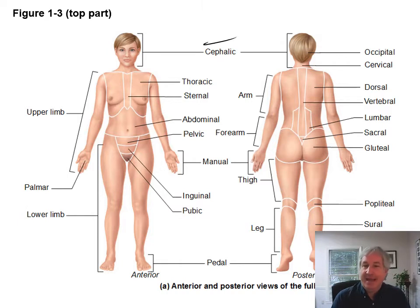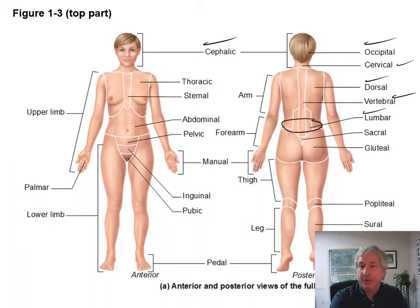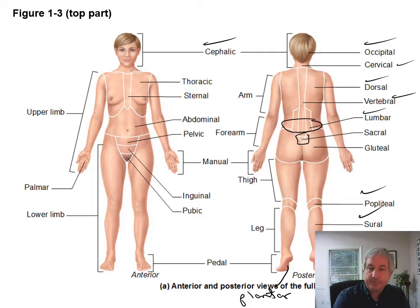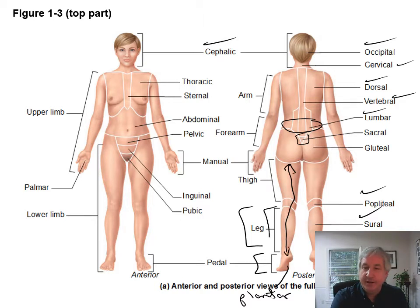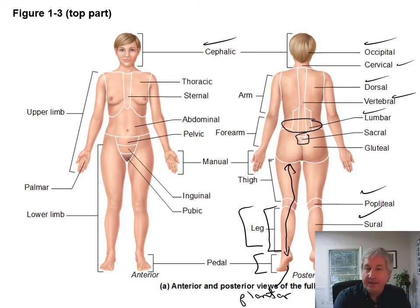We have the cephalic region — that's the head. The occipital region is the back of the head. Cervical region is the neck. We have dorsal, which is the whole back. Vertebral is where the spinal cord and vertebrae are. Lumbar region is the lower part of the back. Sacral region is where the sacrum is. Gluteal region is the buttocks. Popliteal region is the back side of the knee. The sural region is your calf. The plantar region — P-L-A-N-T-A-R — is the bottom of the foot. The pedal region refers to the foot. The leg is just the lower leg encompassing the calves and the shin, and the thigh is the upper leg.